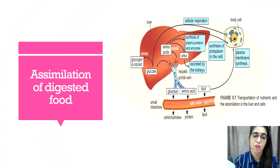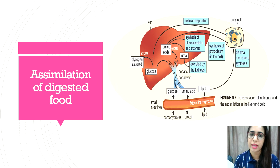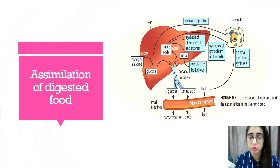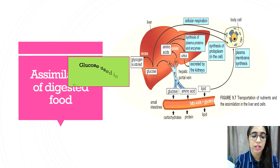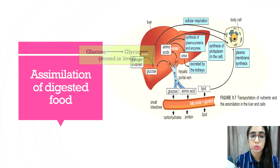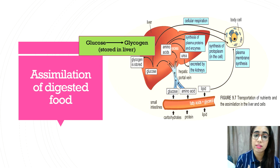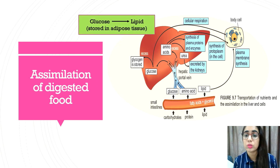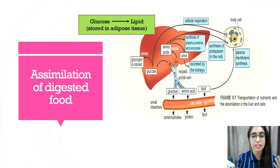Now we will look into the assimilation of digested food. Assimilation is the utilization of digested food — carbohydrates, amino acids, and lipids — to build up components in body cells or tissues, and also for cellular respiration. Regarding assimilation of glucose, glucose is used in cellular respiration to produce energy. Excess glucose is converted into glycogen and stored in the liver and muscles, or converted into lipid and stored in the adipose tissue underneath the skin.